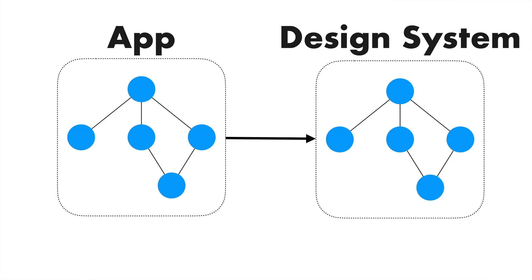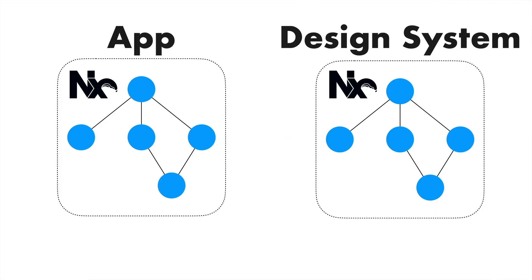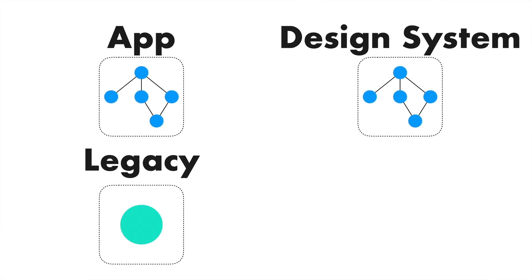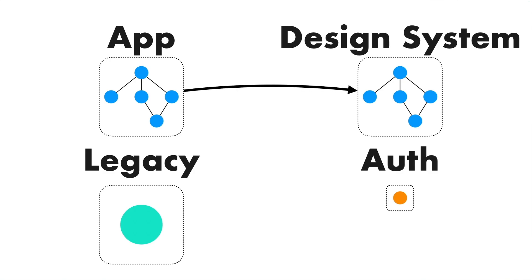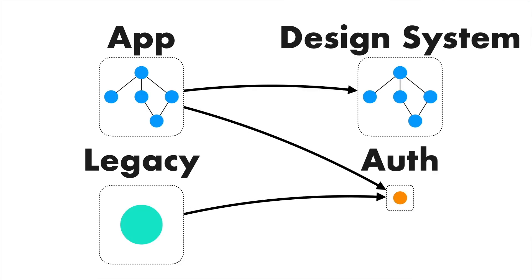It's pretty easy to keep in your head that the application depends on the design system, and both of these repos are managed with NX. But you have a lot more applications than this — like a legacy application that doesn't use NX and is written in a completely different framework, and an auth client library. This is still okay: you can remember that the application depends on the design system and the auth client, and the legacy system only depends on the auth client.